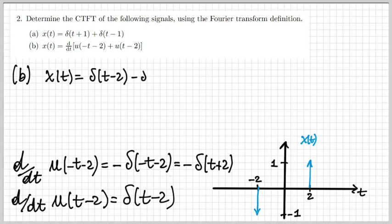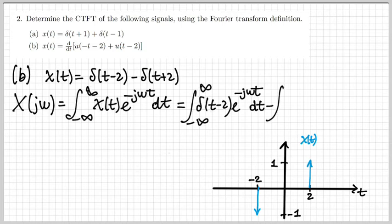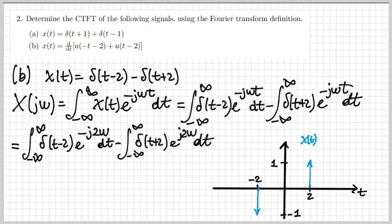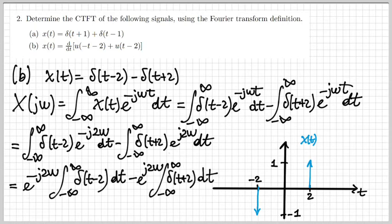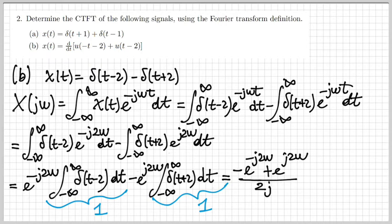Now we answer the original question: what is the Fourier transform of x of t? I write the expression for x of t and plug it into the Fourier transform integral. Again, we get two integrals by linearity. Using the impulse property, the first impulse is at t plus 2, so I replace t equal minus 2 in the first exponential, and t equal plus 2 in the second. The two exponentials are constants with respect to t, so I take them out. The integrals of the deltas are each one, giving a sum of two complex exponentials. With simple manipulations — dividing by 2j and multiplying by minus 2j — this yields minus 2j times sine of 2ω.